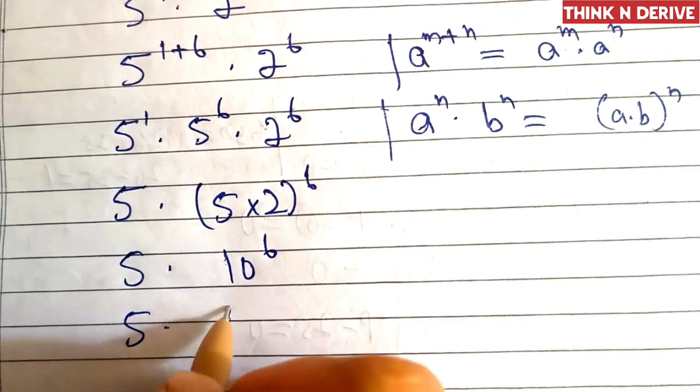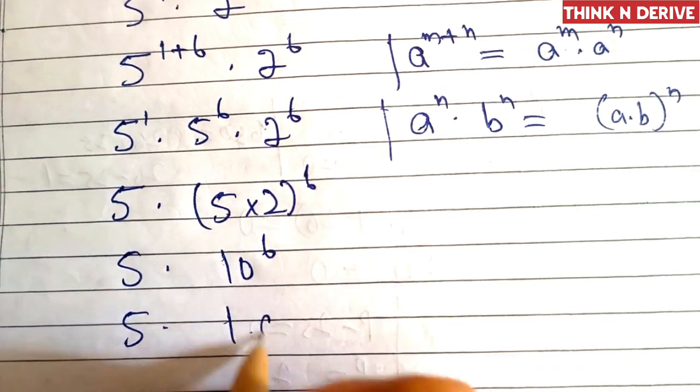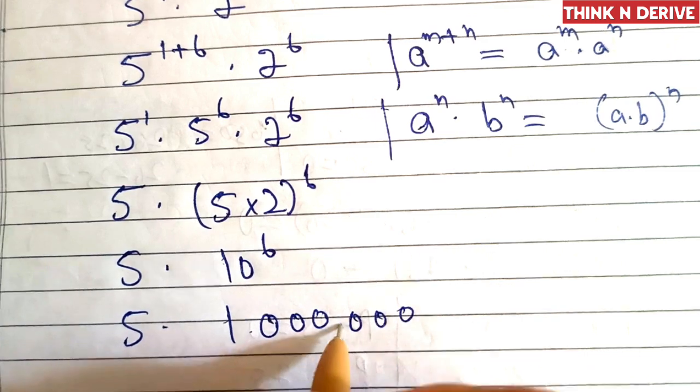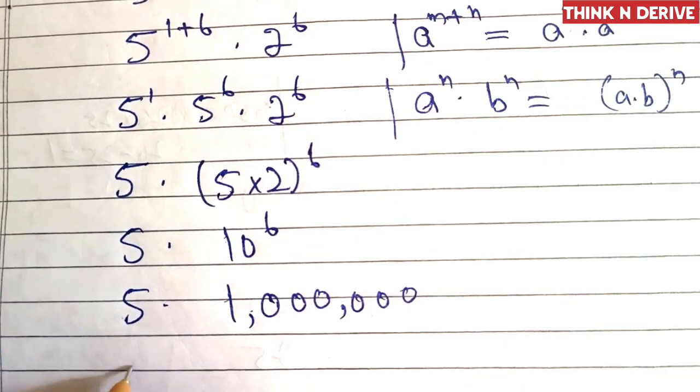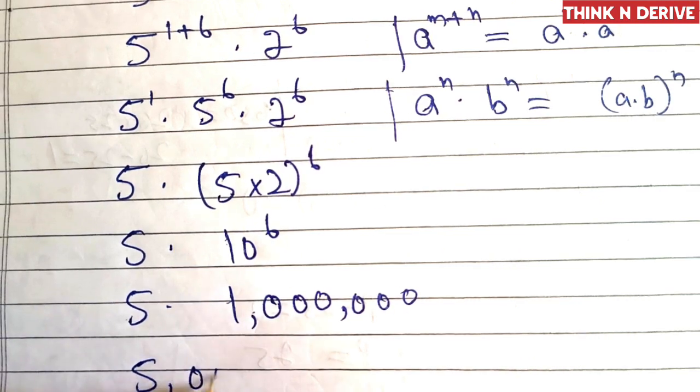Now the value of 10 power 6 is this is 1 million. So now we will multiply these, so this will become 5 million.